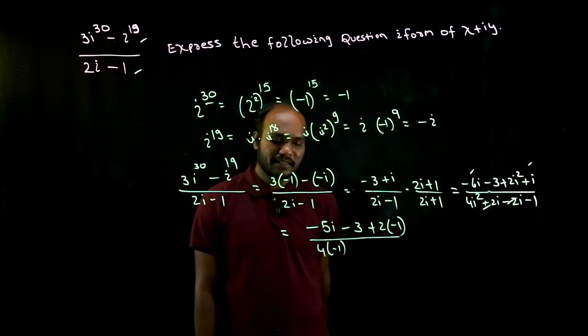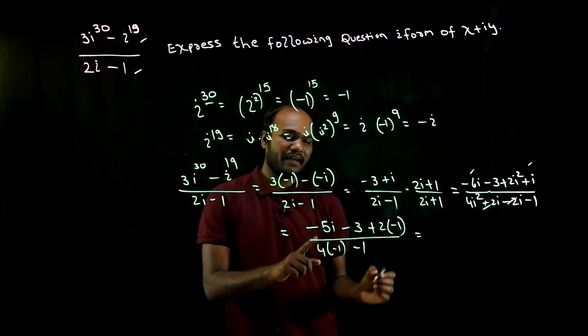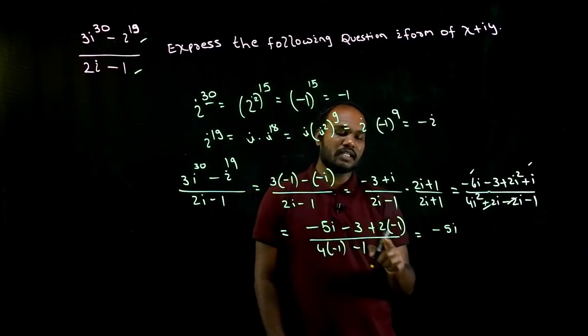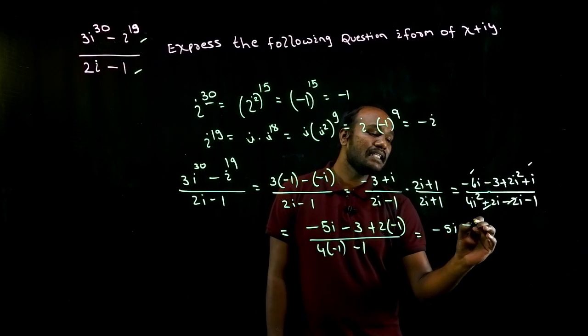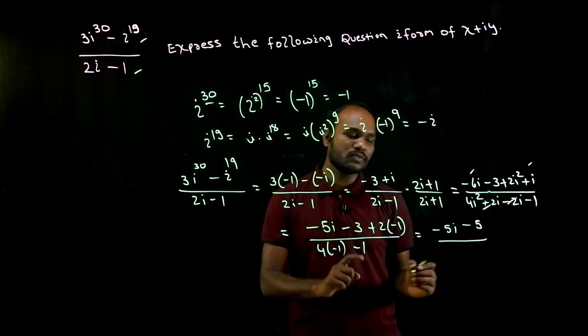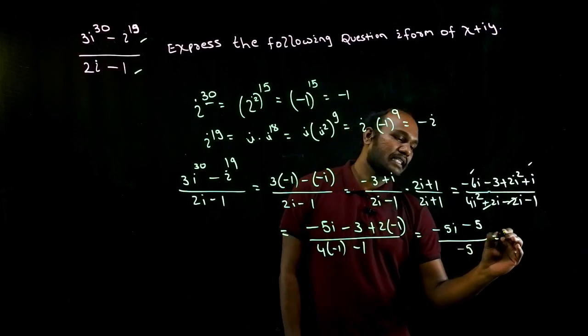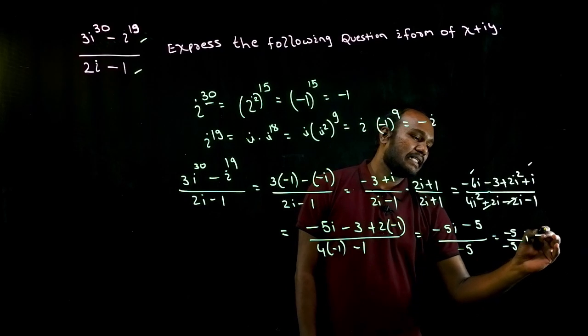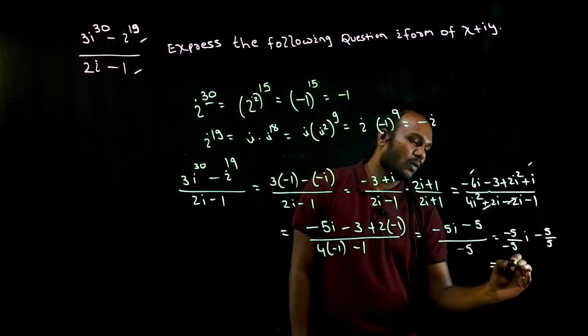So we have minus 5i, minus 3 plus of minus 2, that is minus 3 minus 2 is how much? Minus 5, divided by minus 4 minus 1 is minus 5. So I'll get it as minus 5 by 5, minus 5i, and minus 5 by 5.